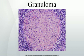Listeria monocytogenes: Listeria monocytogenes infection in infants can cause potentially fatal disseminated granulomas, called granulomatosis infantiseptica, following an in utero infection.